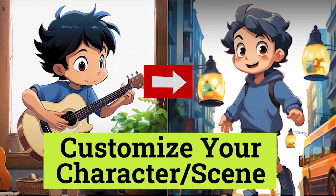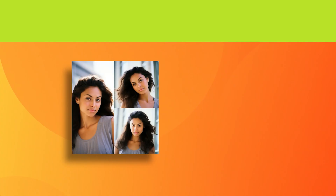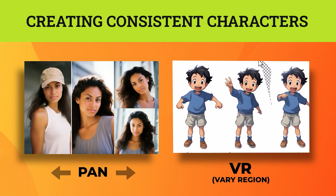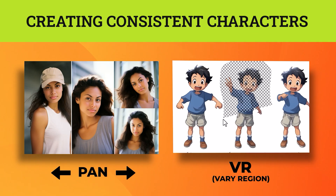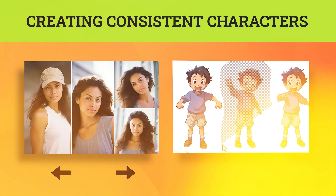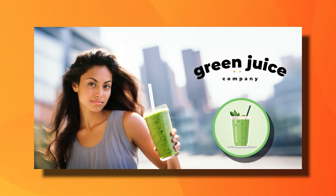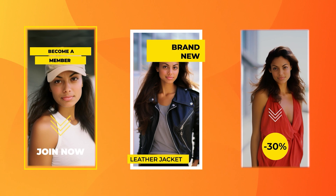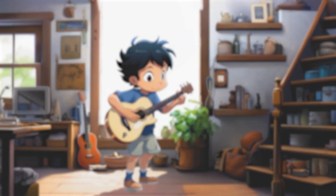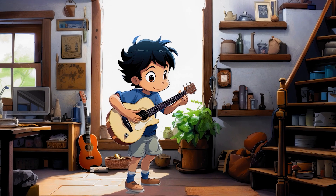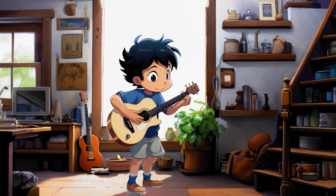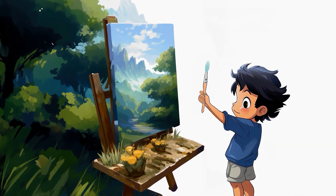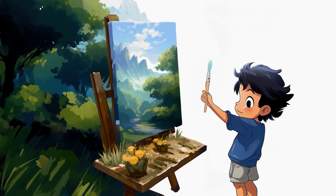In this video, we're going to be looking at the Pan and VR method for helping create consistency in your characters. It can be helpful in advertising your business to have a consistent character across your content. And it works amazingly for storytelling, to make sure your characters stay the same throughout the story.